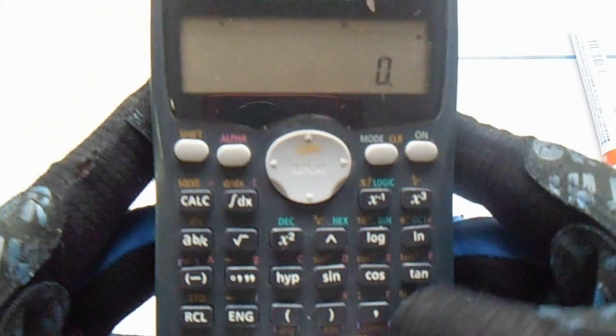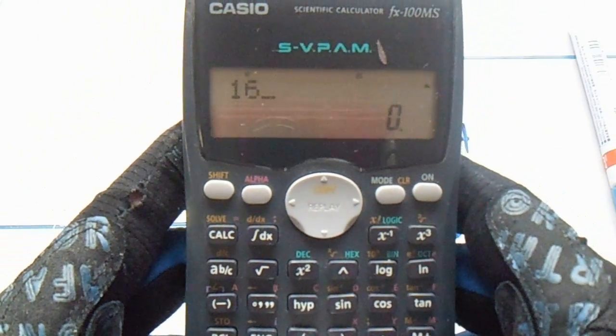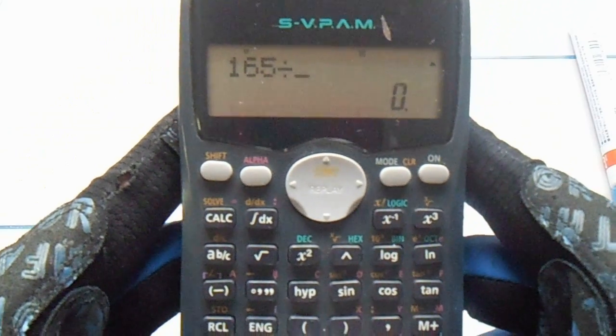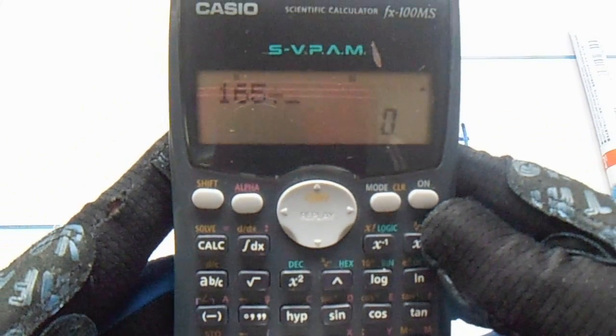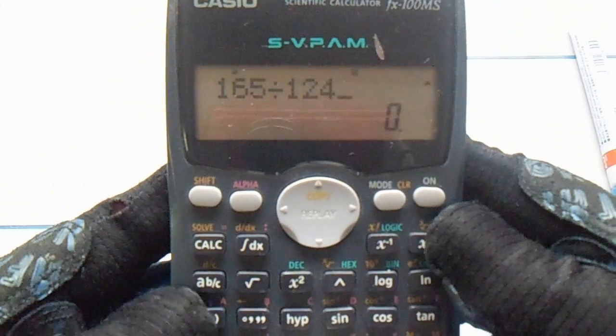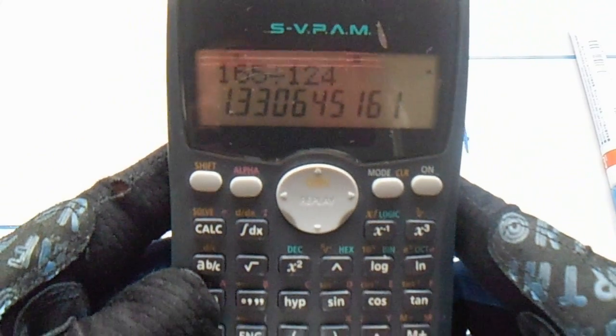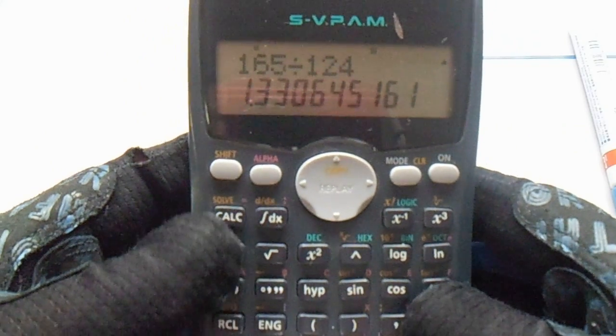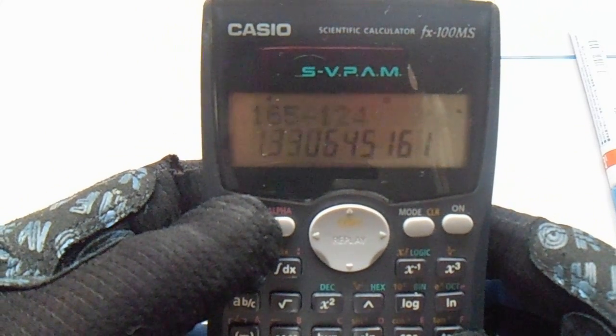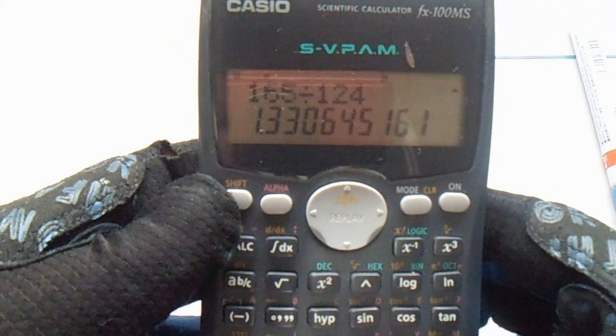So 165 divided by 124, so 1.3306. So 1.3306, and then just press this shift and tan.